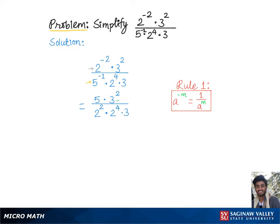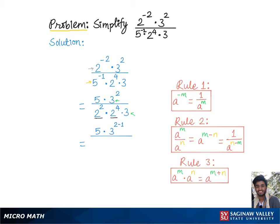Now for the expressions with the common base 3, we'll use rule 2, according to which we'll get 5 times 3 raised to the 2 minus 1. For the expressions with the common base 2, we'll use rule 3.